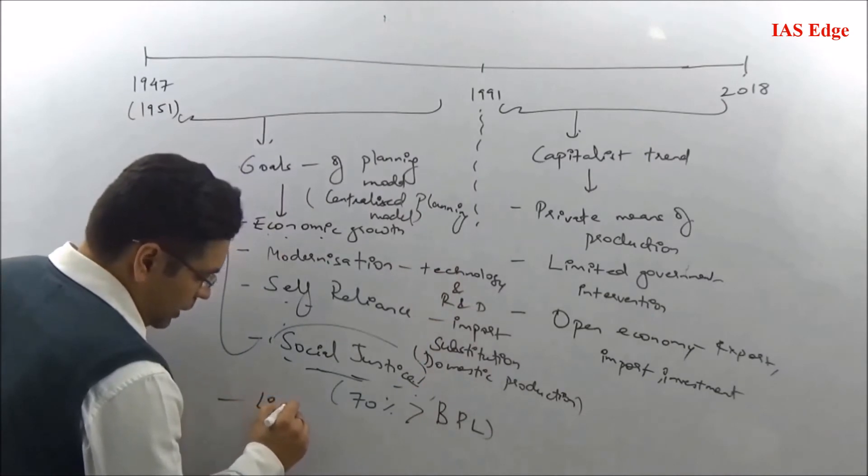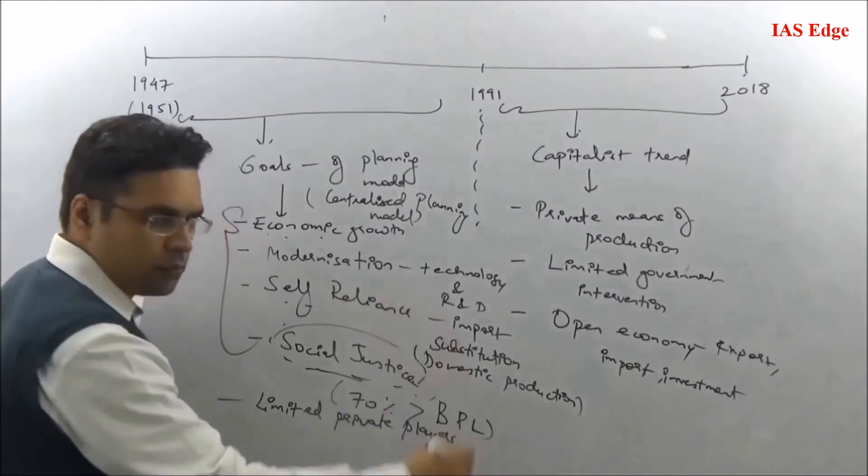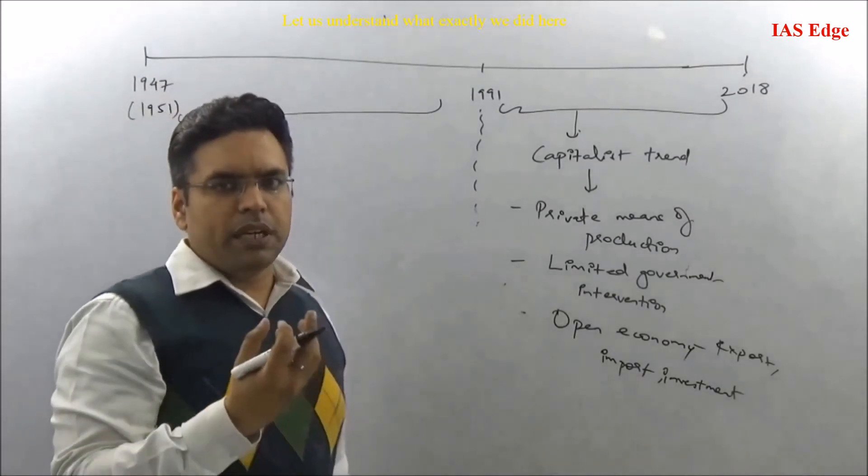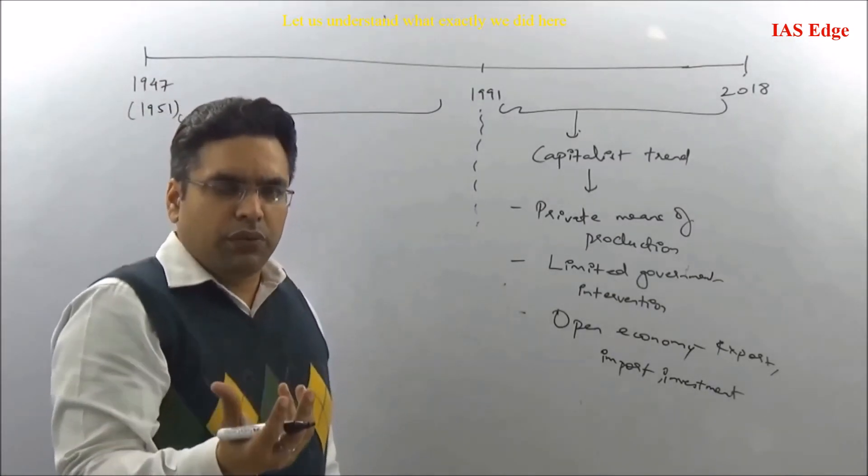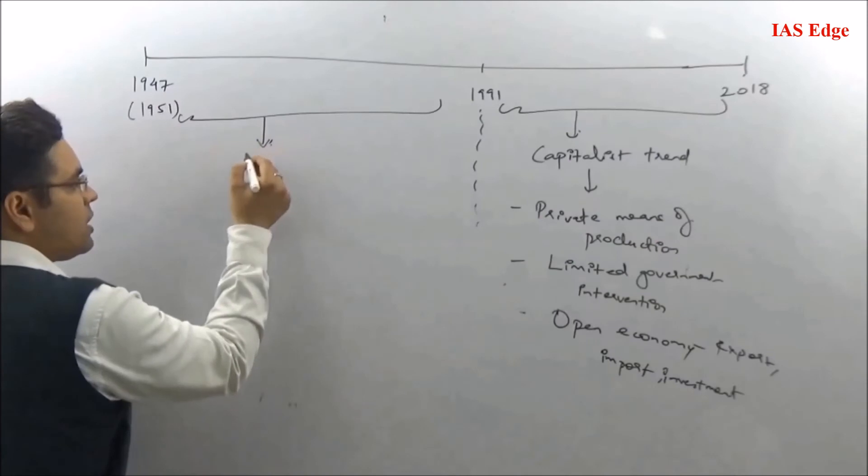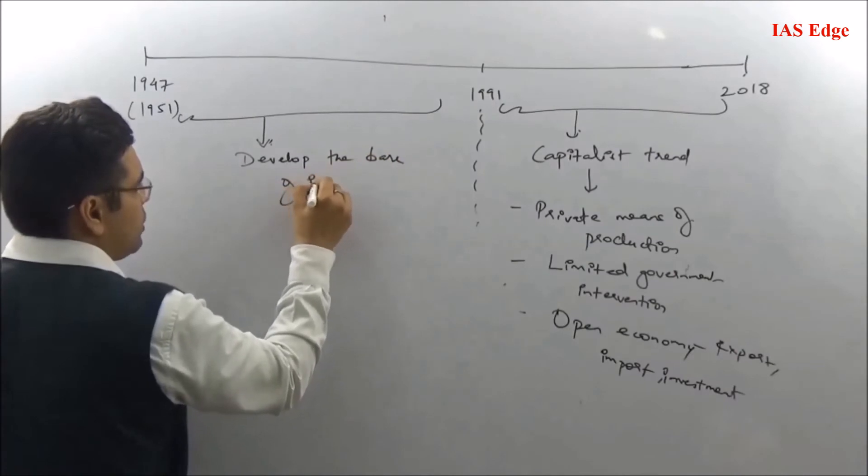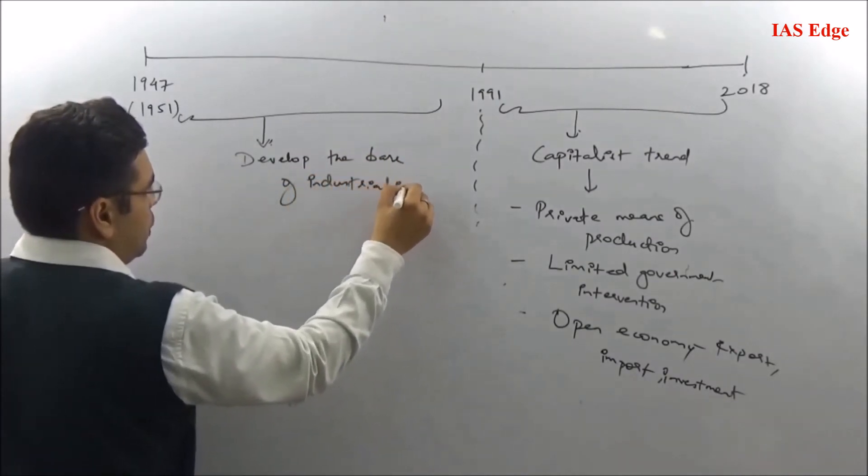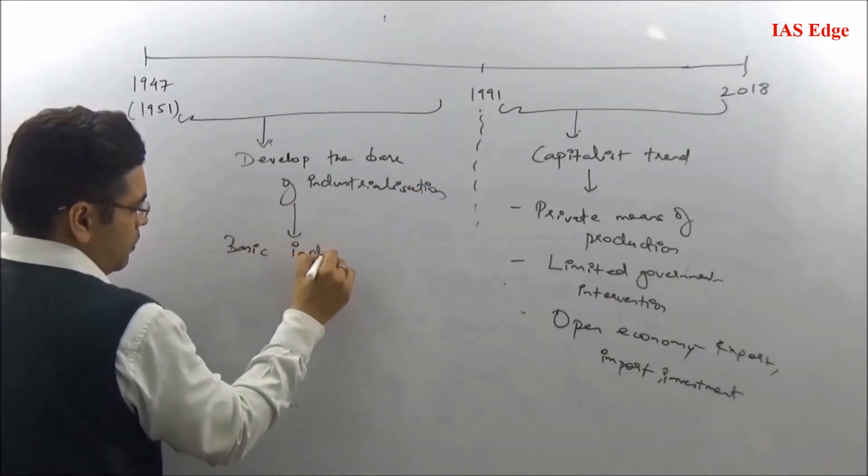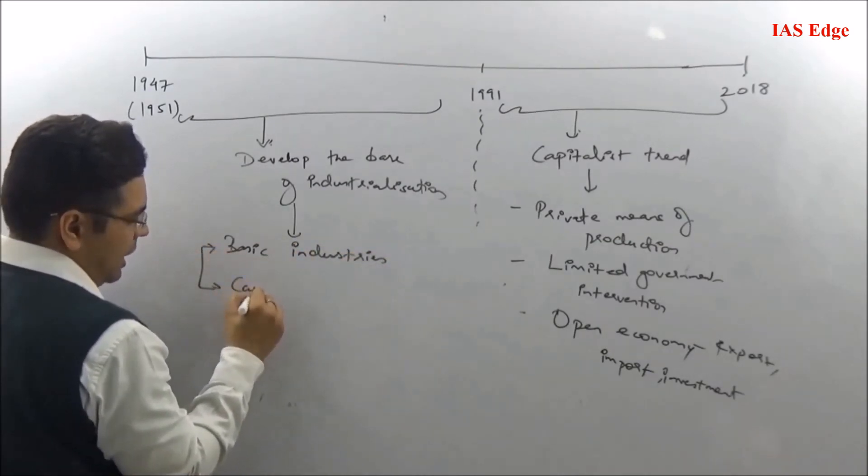These were the four pillars on which the economic growth was based. This economy model was called a centralized planning model because the government was supposed to play a major role. There were limited private players. India had limited resources and limited industries.